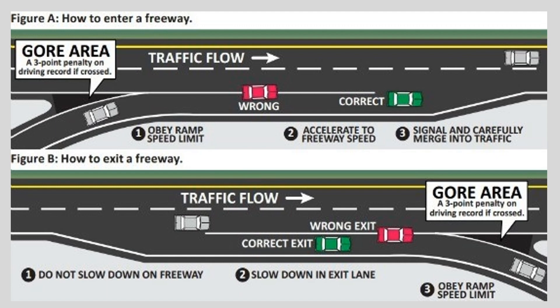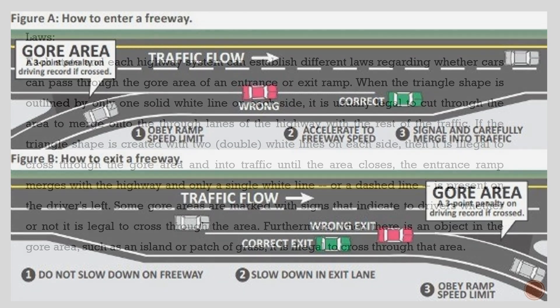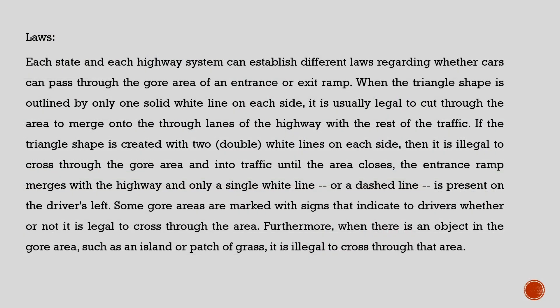This graphic demonstrates the proper way to enter and exit the highway. Each state and highway system can establish different laws regarding whether cars can pass through the GORE area. When the triangle shape is outlined by only one solid white line on each side, it is usually legal to cut through the area to merge onto the through lanes. If the triangle shape is created with two double white lines on each side, it is illegal to cross through the GORE area until the area closes. Some GORE areas are marked with signs indicating whether it is legal to cross through. Furthermore, when there is an object in the GORE area, such as an island or patch of grass, it is illegal to cross through that area.